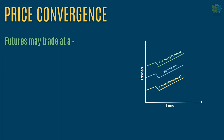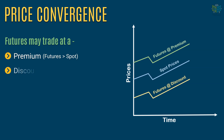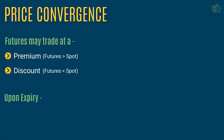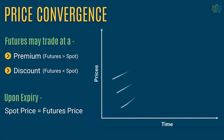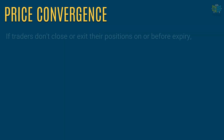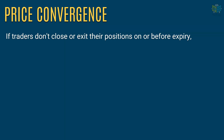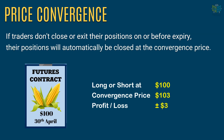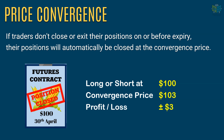The futures contract may trade at a premium or discount before the expiry date. But upon expiry, the futures price will converge with the spot market price of the underlying. The closing price of the spot market will be equal to the closing price of the futures contract expiring on that date. If the traders do not square off their positions before or on the expiry date, the exchange will automatically square off their positions at the convergence price.